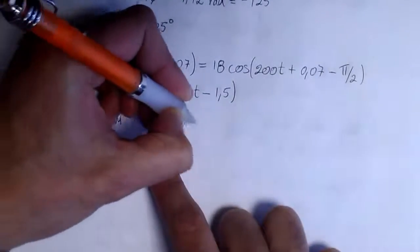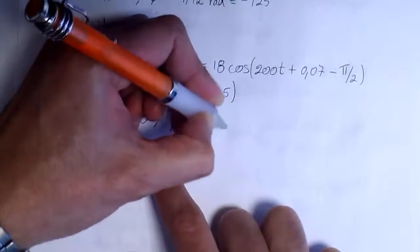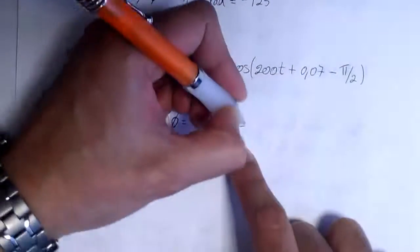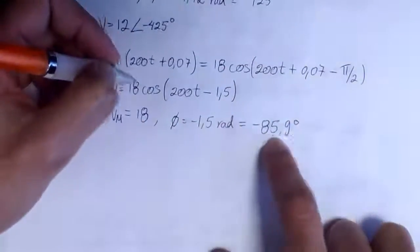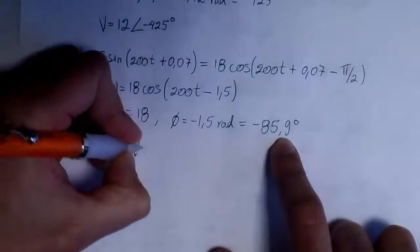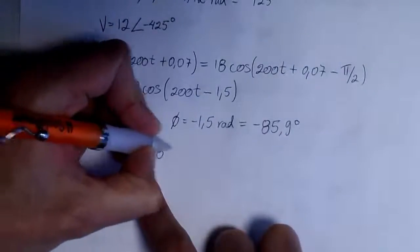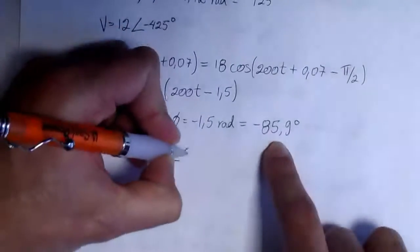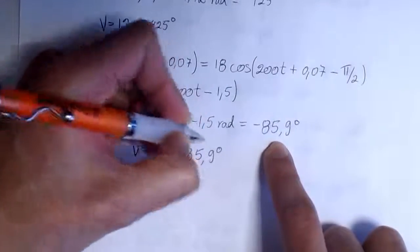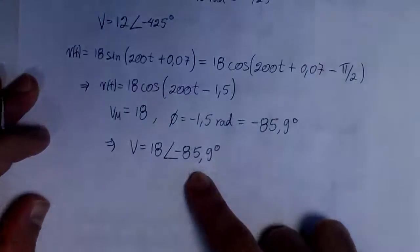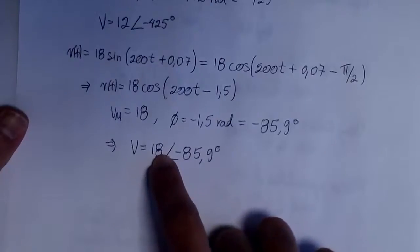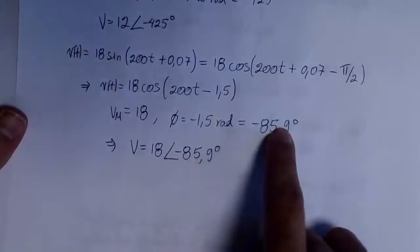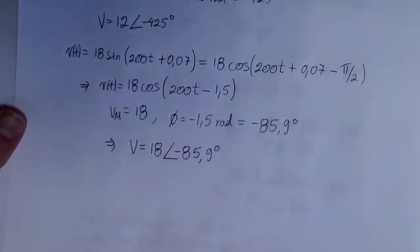Now we have a cosine function and we can apply the same procedure as before to find the phasor. We get the amplitude: 18. We get the phase: minus 1.5 radians, which converts to minus 85.9 degrees. So the phasor for this function is a magnitude of 18 with an angle of minus 85.9 degrees. That's the phasor of a function described as a sine in the time domain. If we have the phasor and want to go back to time, we just need the magnitude and phase to put into the cosine function.